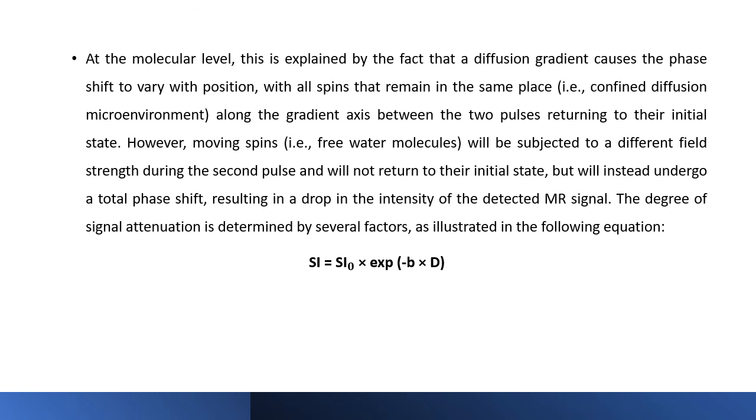Where SI notes the signal intensity of the T2-weighted image with no diffusion gradient applied, B is the degree of diffusion weighting, and D is the diffusion coefficient.